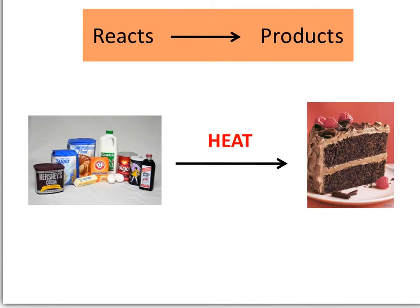Here's an example: the reactants include flour, sugar, milk, eggs, and butter. We react them together and apply heat, and the product we end up with is a chocolate cake. Think about the process being irreversible — once the flour, butter, and eggs are baked into the cake, you can't extract those ingredients back to their raw state. Once the cake is baked, the change is irreversible.